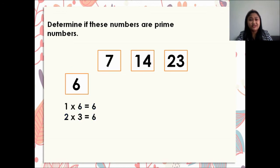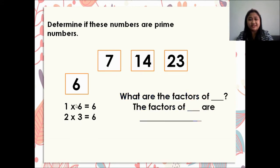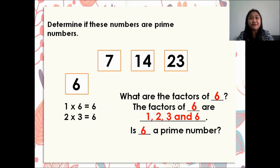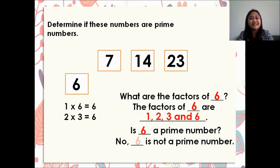What are the factors of 6? First we have 1 times 6 is equal to 6, and 2 times 3 is equal to 6. So we have 1, 6, 2, and 3 — those are the factors of 6. The factors of 6 are 1, 2, 3, and 6. Is 6 a prime number?